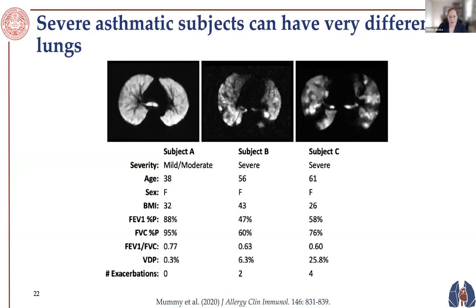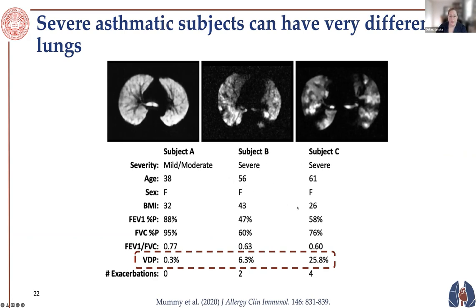Going back to the cohort data, we realized that subjects could be classified as severe and be otherwise quite similar — same age, sex, and FEV1 — yet their SVDPs or VDPs at the segmental or whole-lung level could be quite different. We felt that our models could help interpret some of this data.